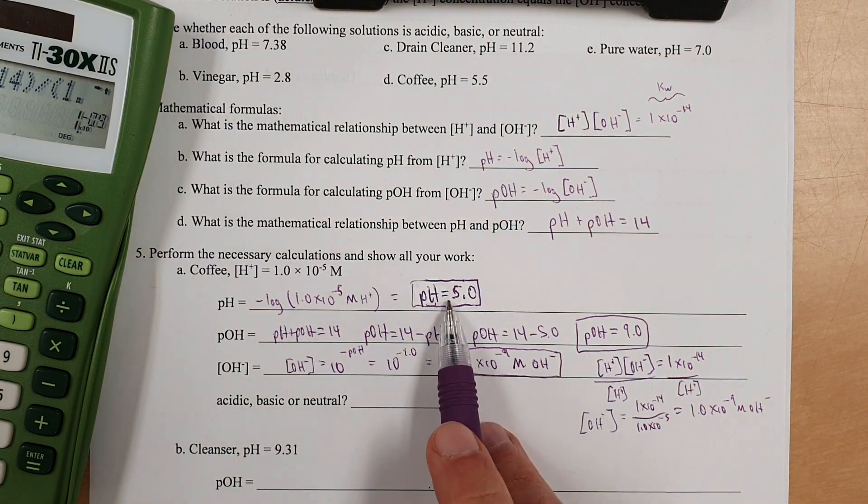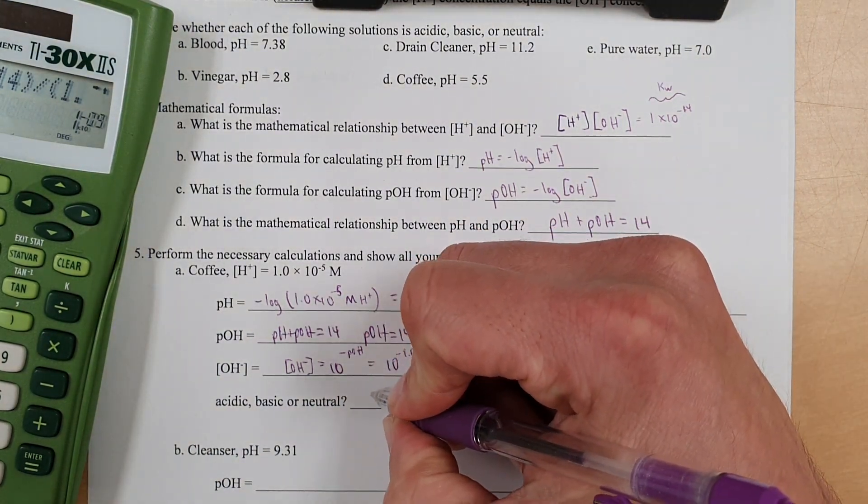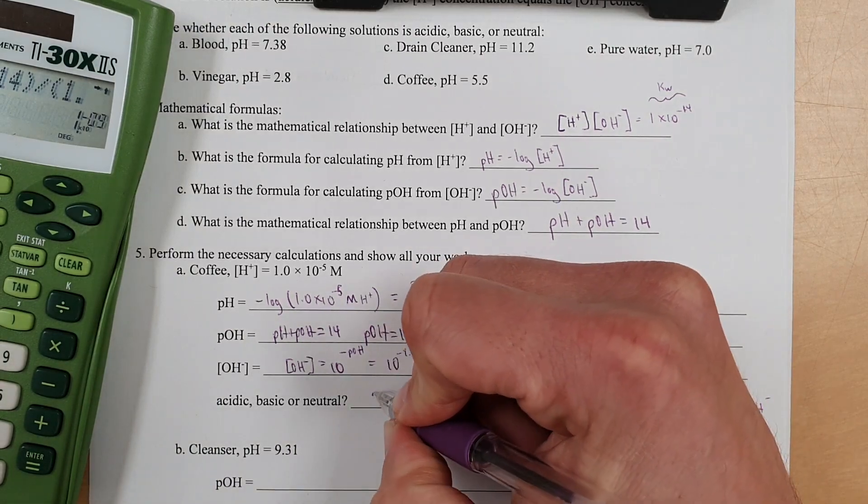Basic or neutral? Look, the pH is below 7. It's acidic. Acidic, basic or neutral? pH below 7. It's acidic.